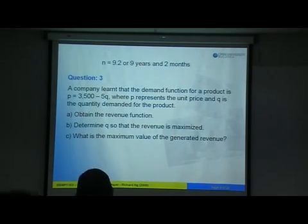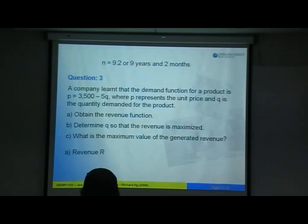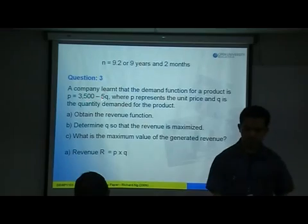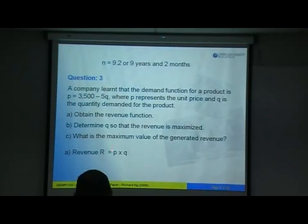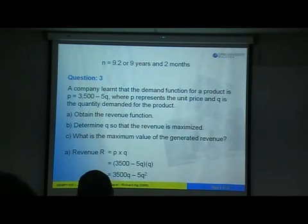The question asks: find the revenue function, find Q that maximizes revenue, and find the maximum revenue — same structure as before. Part A: revenue equals P times Q. Substitute P with 3,500 minus 5Q to get 3,500 minus 5Q times Q, which simplifies to 3,500Q minus 5Q squared.